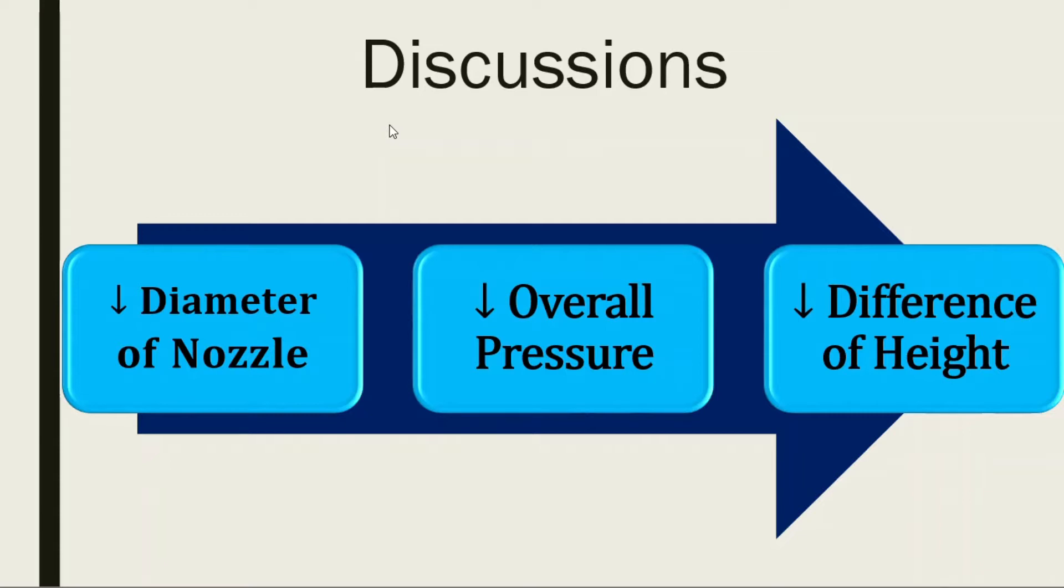In this experiment, we found out that when we use smaller diameter of nozzle, we can get lower overall pressure in the impact of jet. As a result, we actually can get lower or smaller difference of height.